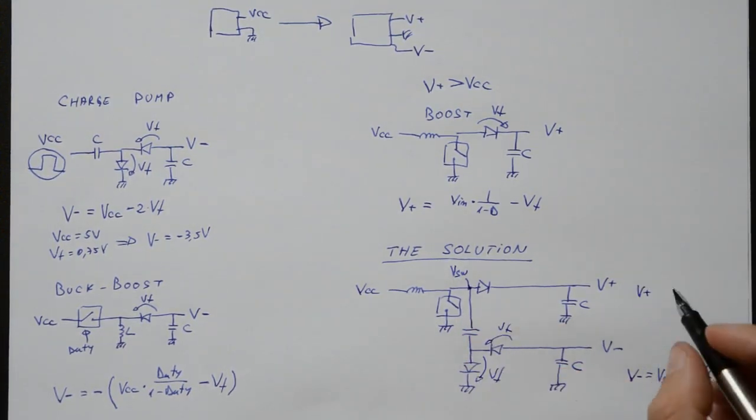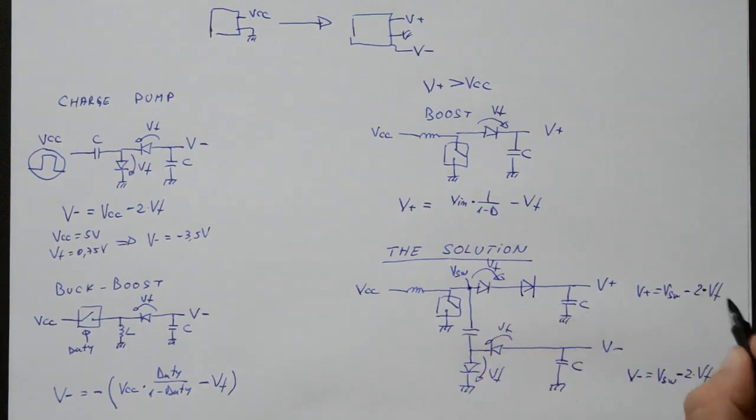This is why the positive rail has two diodes, to have the same voltage drop as the negative one. We'll just have to see if this thing works.